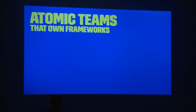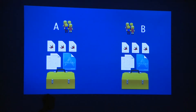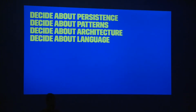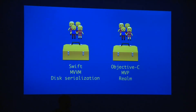That allows teams to be atomic very easily. Each team owns its own framework. So instead of accessing the single project, team A has its own project, its own data model, and its own framework — and the same with team B. That means they can decide about a lot of things: their persistence model, whether to use Core Data, the patterns they want to use — Model-View-ViewModel or Model-View-Presenter — the architecture, and even the language. What if a team prefers to write the framework in C++? Or in Swift? Why not? It's up to them.